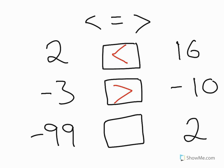Last one is negative 99 and positive two. It's really important to look at the symbol and see that it is a negative integer on the left. Therefore, it must be lesser than the positive integer on the right.